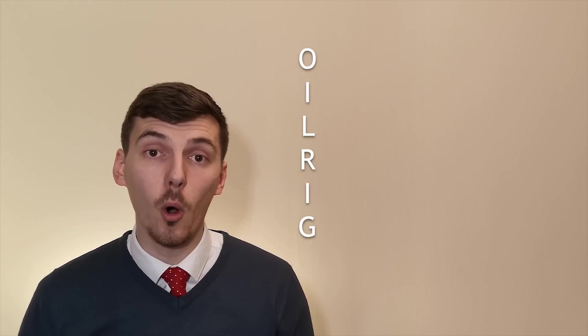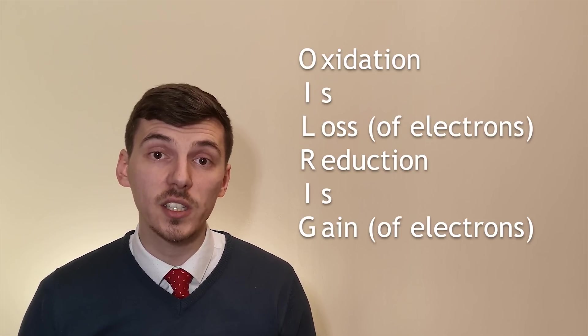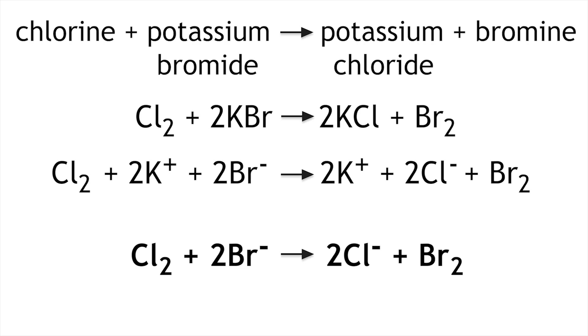You should remember from oil rig the oxidation is loss of electrons and reduction is gain of electrons. We can see that the chlorine has gained electrons so it has been reduced whereas the bromide has actually lost electrons and has been oxidized.